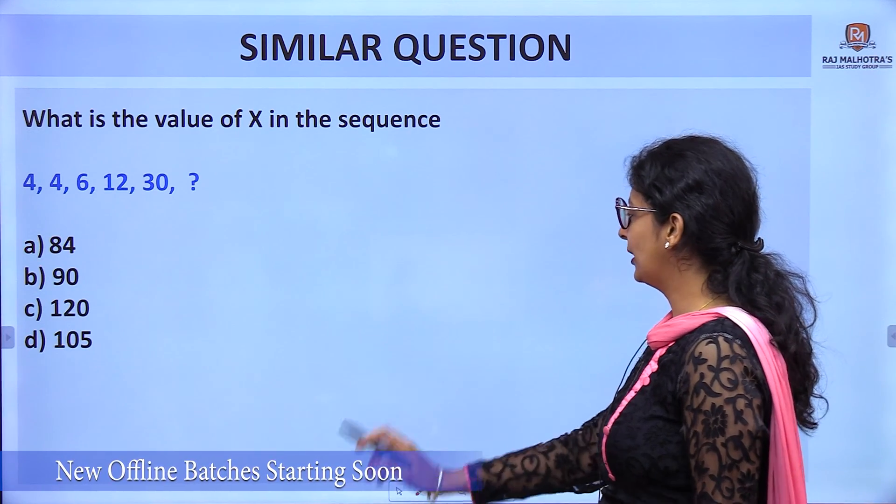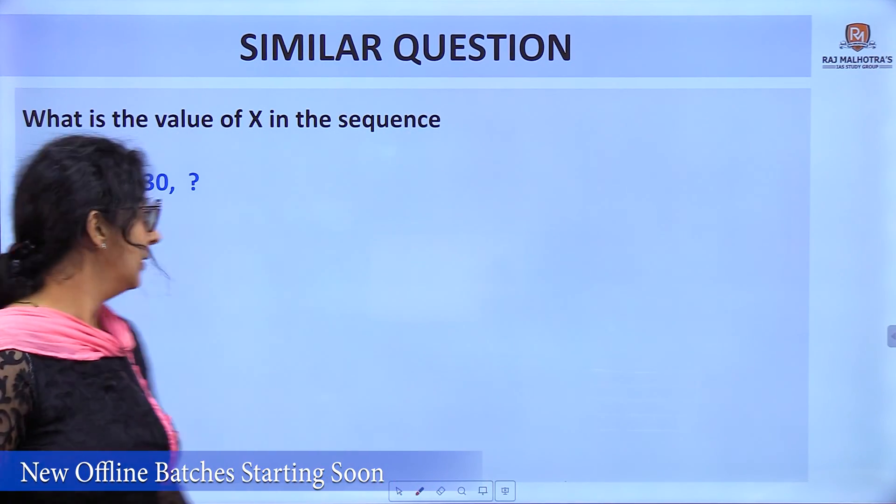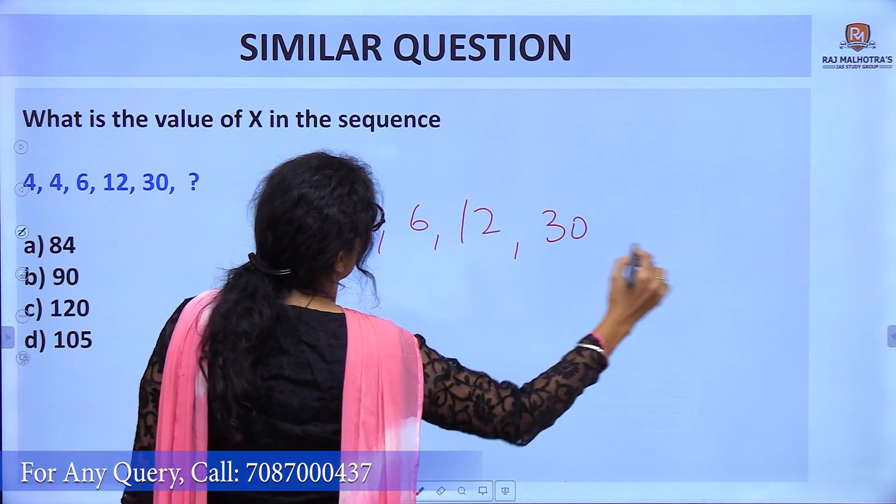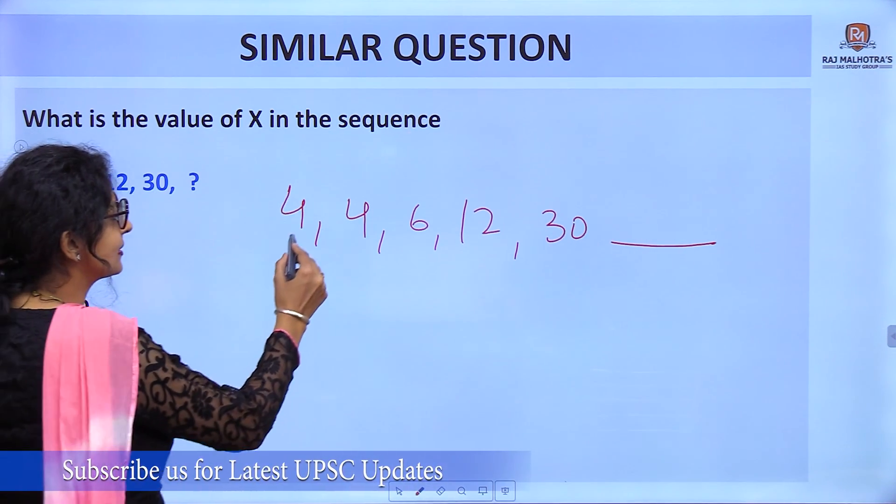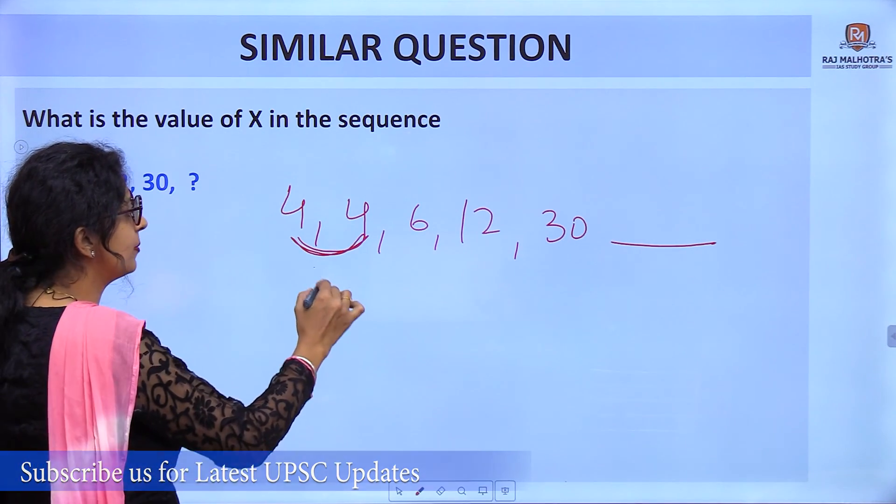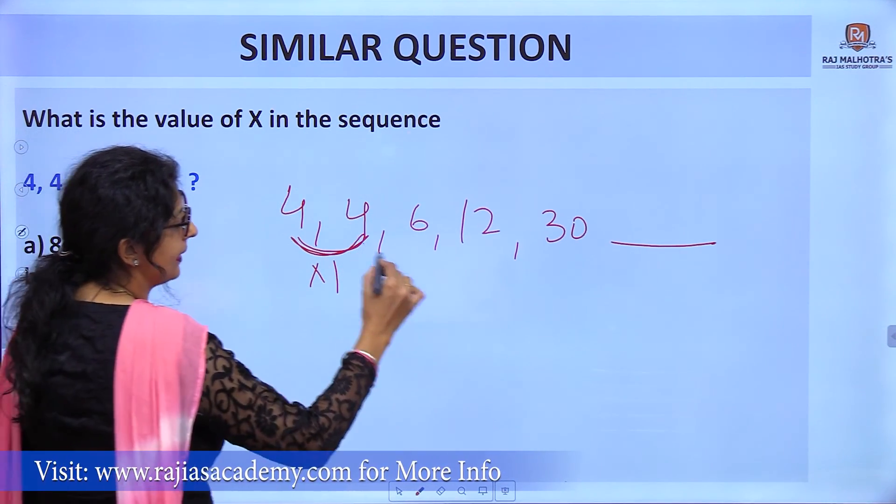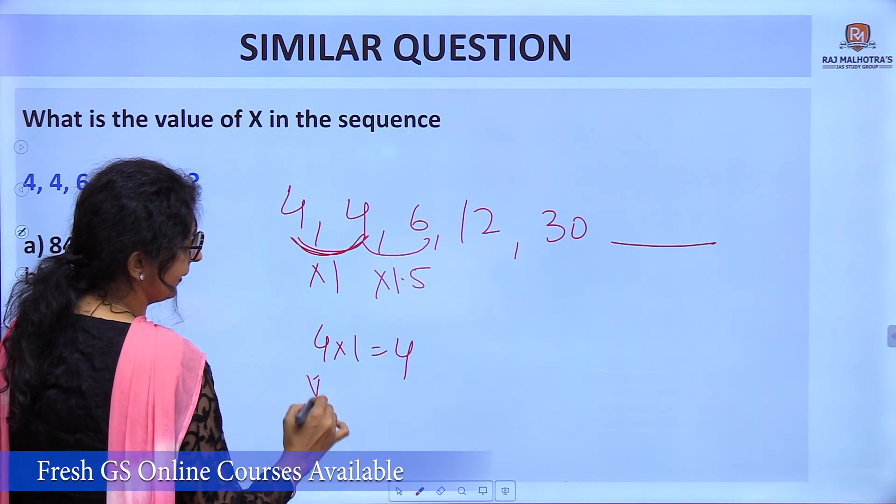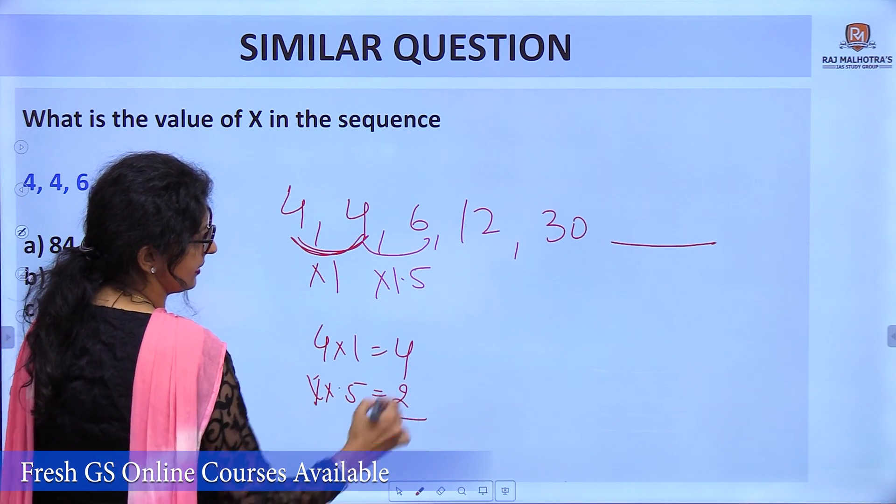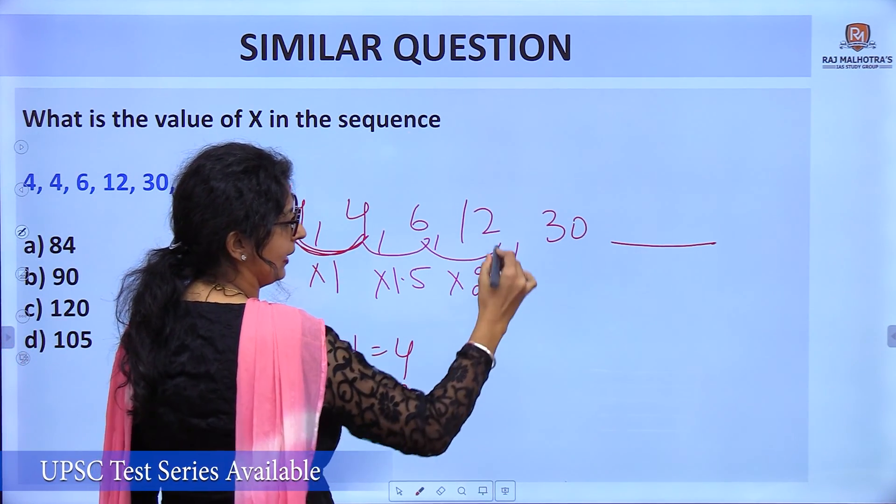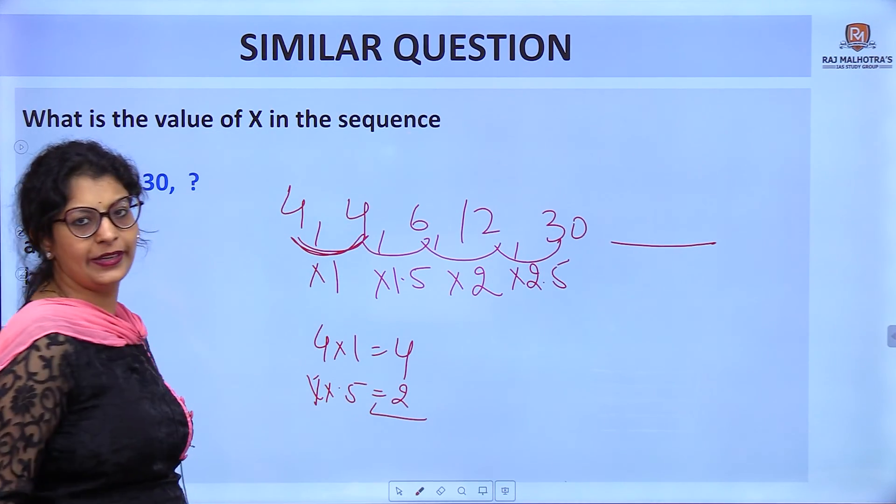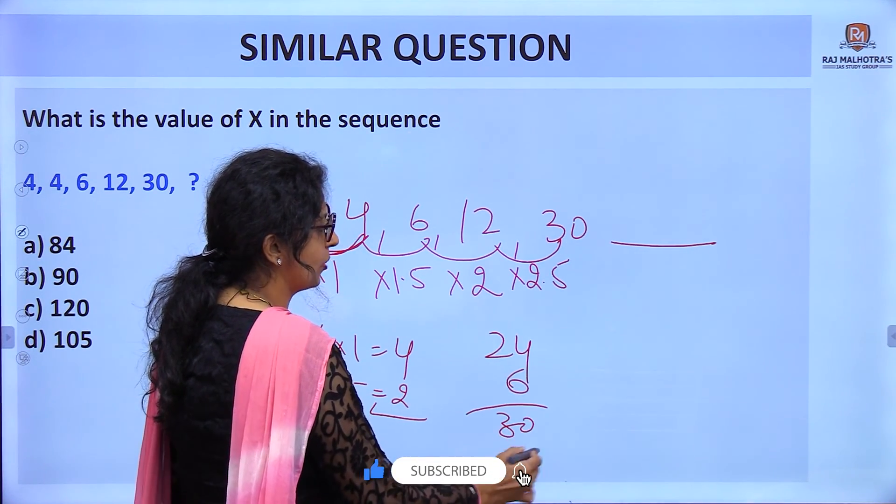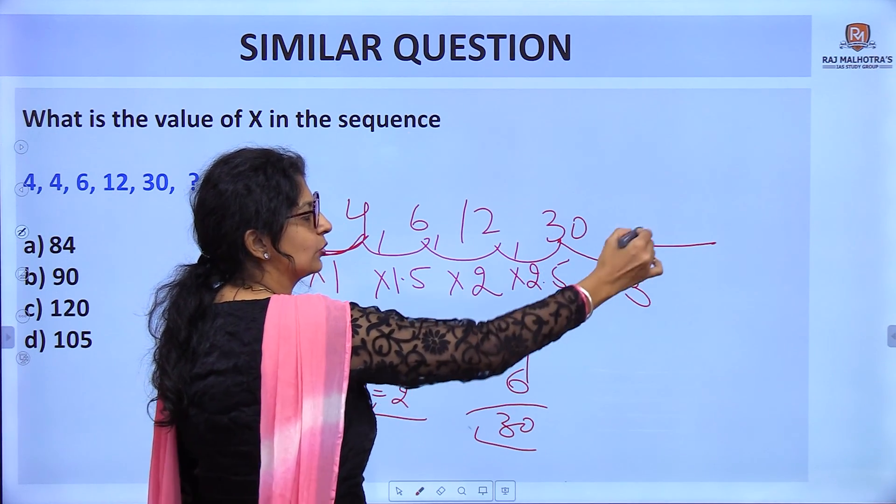The question is 4, 4, 6, 12, 30, x. When the first and second digits are the same, it's a case of multiplication. 4 × 1 = 4. Next, 4 × 1.5 = 6. Then 6 × 2 = 12. 12 × 2.5 = 30. So next is multiplication by 3: 30 × 3 = 90. The answer is option B.